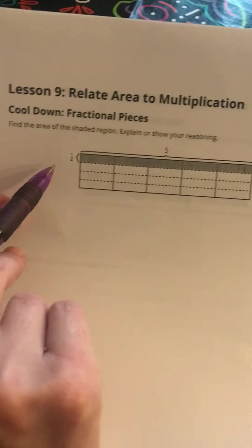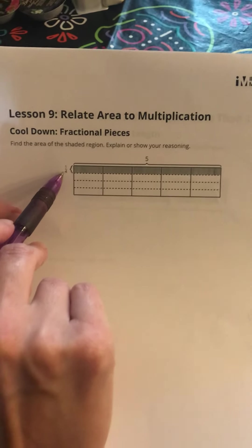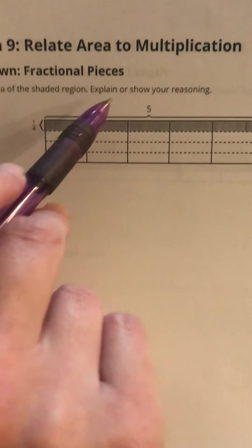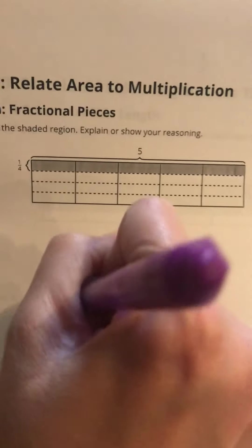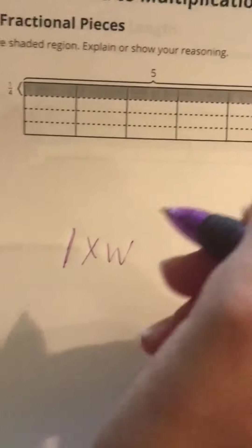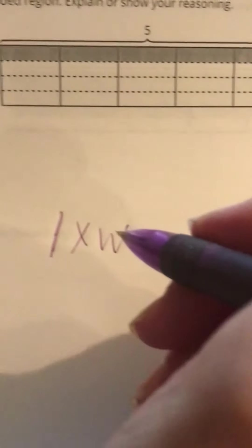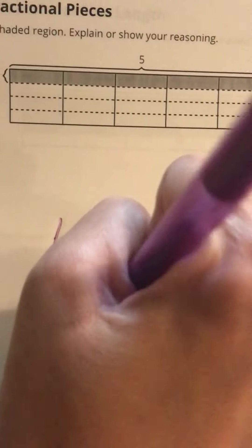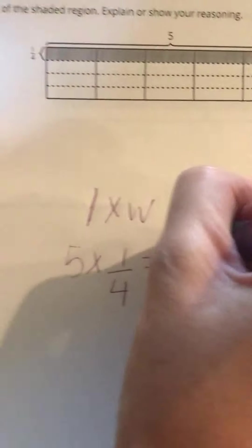So I've got 1/4 and 5. I know when I find the area I multiply the length times the width, or I can multiply the width times the length. So I've got 5 times 1/4. We've been practicing with these and we know that we multiply 5 times 1.